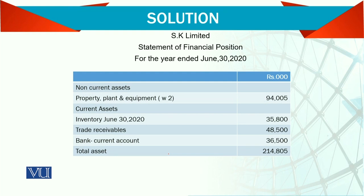The name and the period are shown first. Under non-current assets, we have property, plant and equipment. You look into the schedule we prepared, which shows the assets, how much depreciation has been charged, and what the accumulated depreciation is — and what the net book value is. Here we report the net book value.